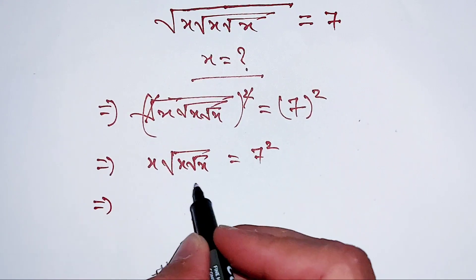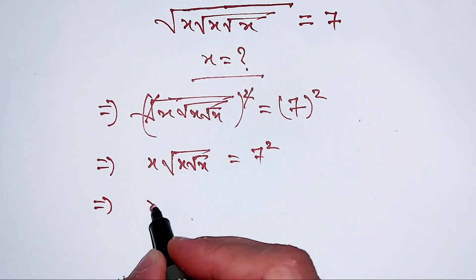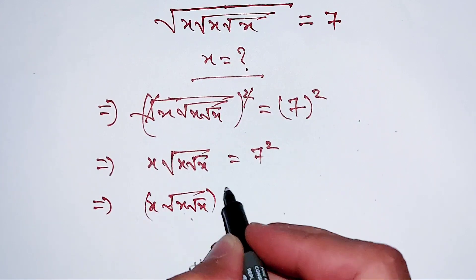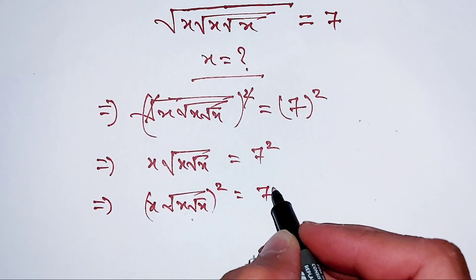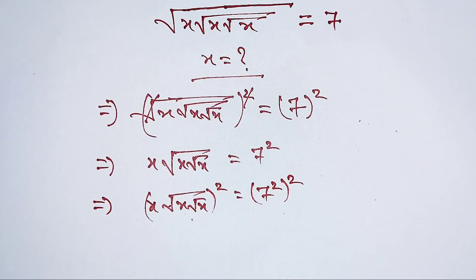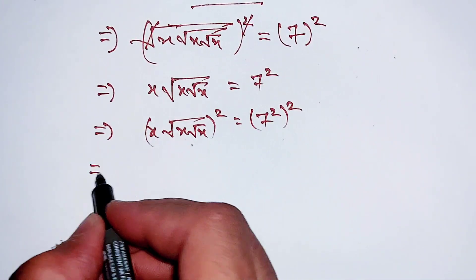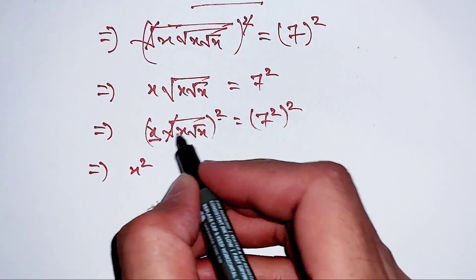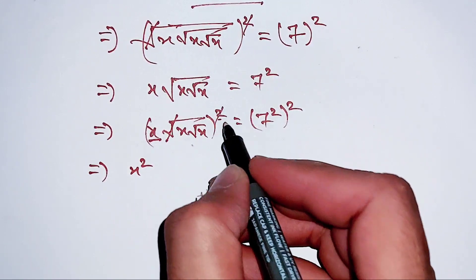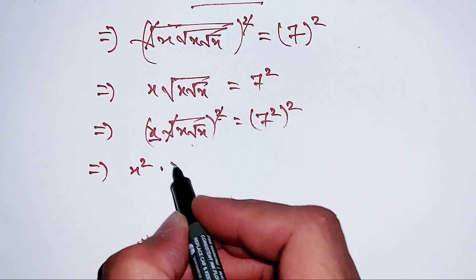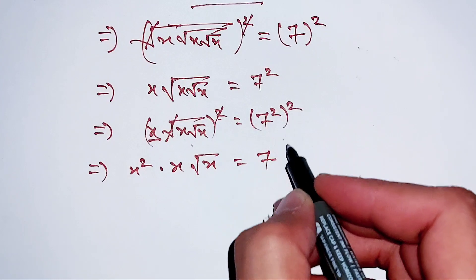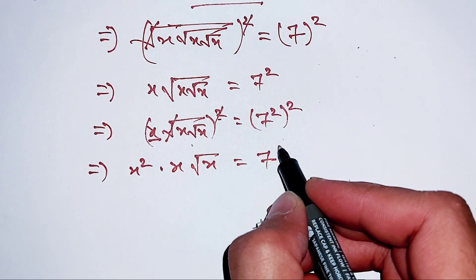Now we will further square both sides. This will become x squared, and this square root will be cancelled out by this square. This will become 7 to the power 4.